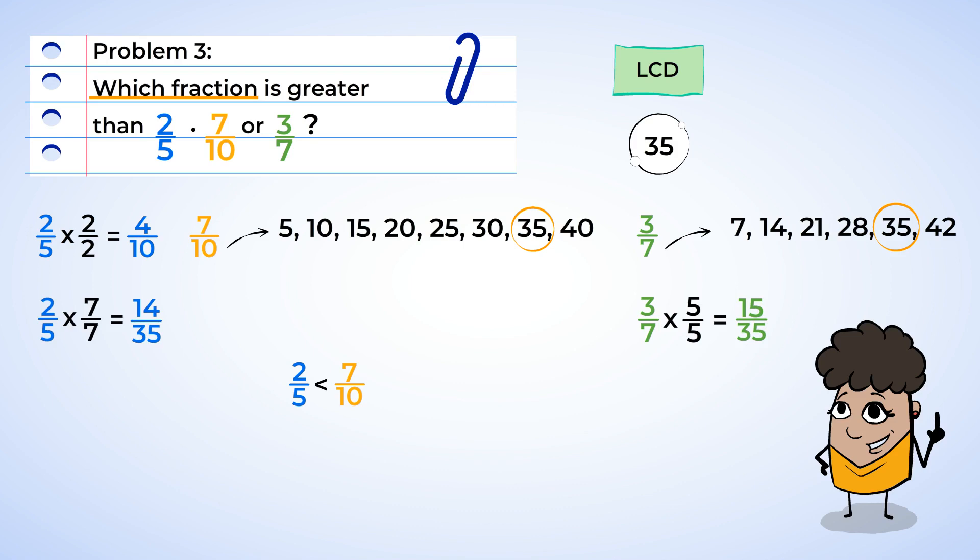Well, fifteen is greater than fourteen, so three-sevenths is greater than two-fifths. Hey, that was a trick question. Both of the fractions are greater than two-fifths. Good thing we checked both fractions.